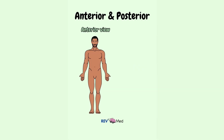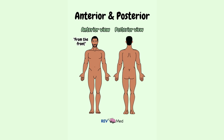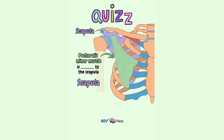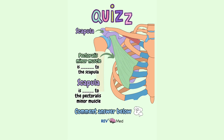We also use anterior to say we are looking at the body from the front — it's an anterior view. And the posterior view means we are looking at the body from the back. The pectoralis minor muscle here is blank to the scapula, or the scapula is blank to the pec minor muscle. Comment below what you think.